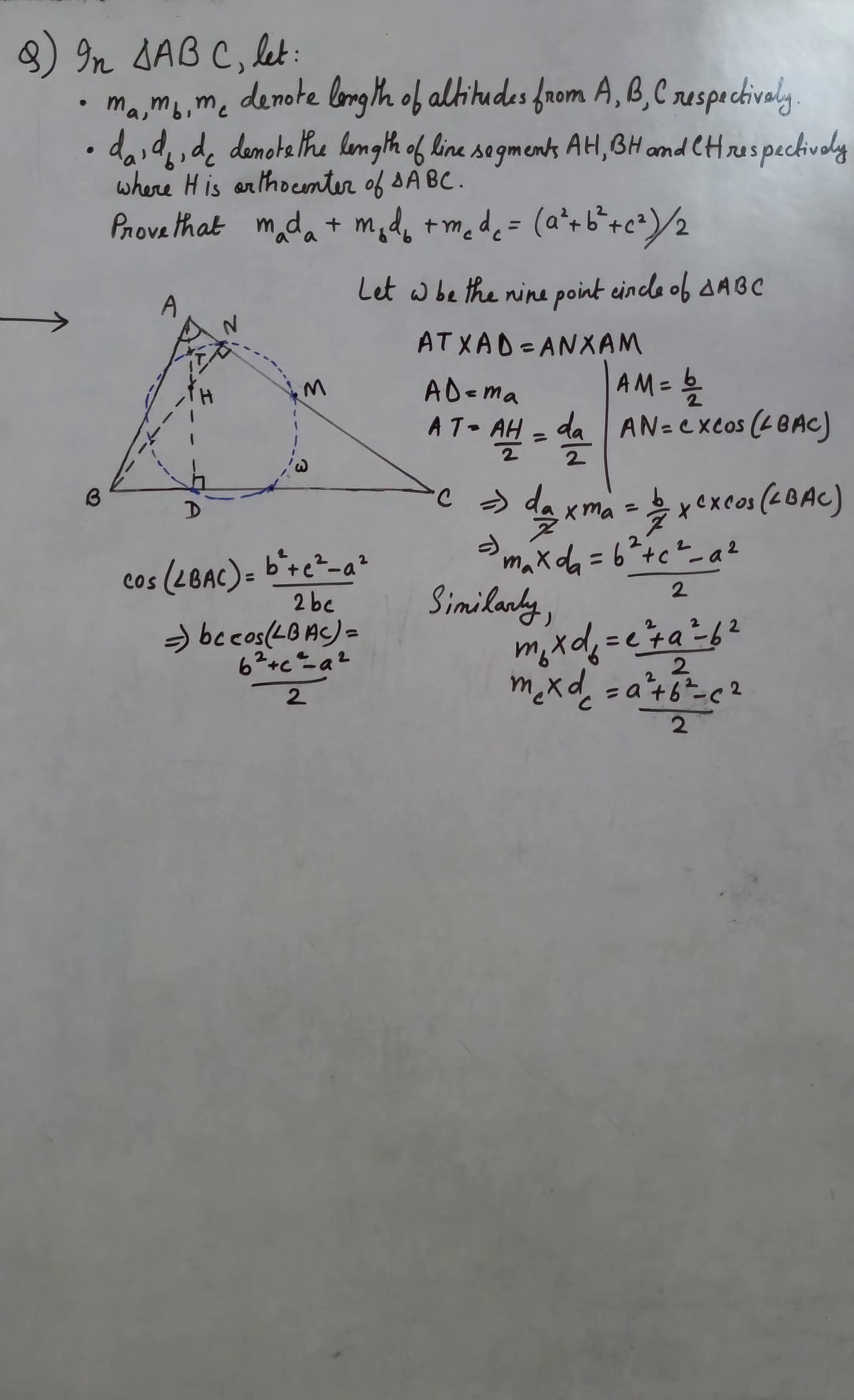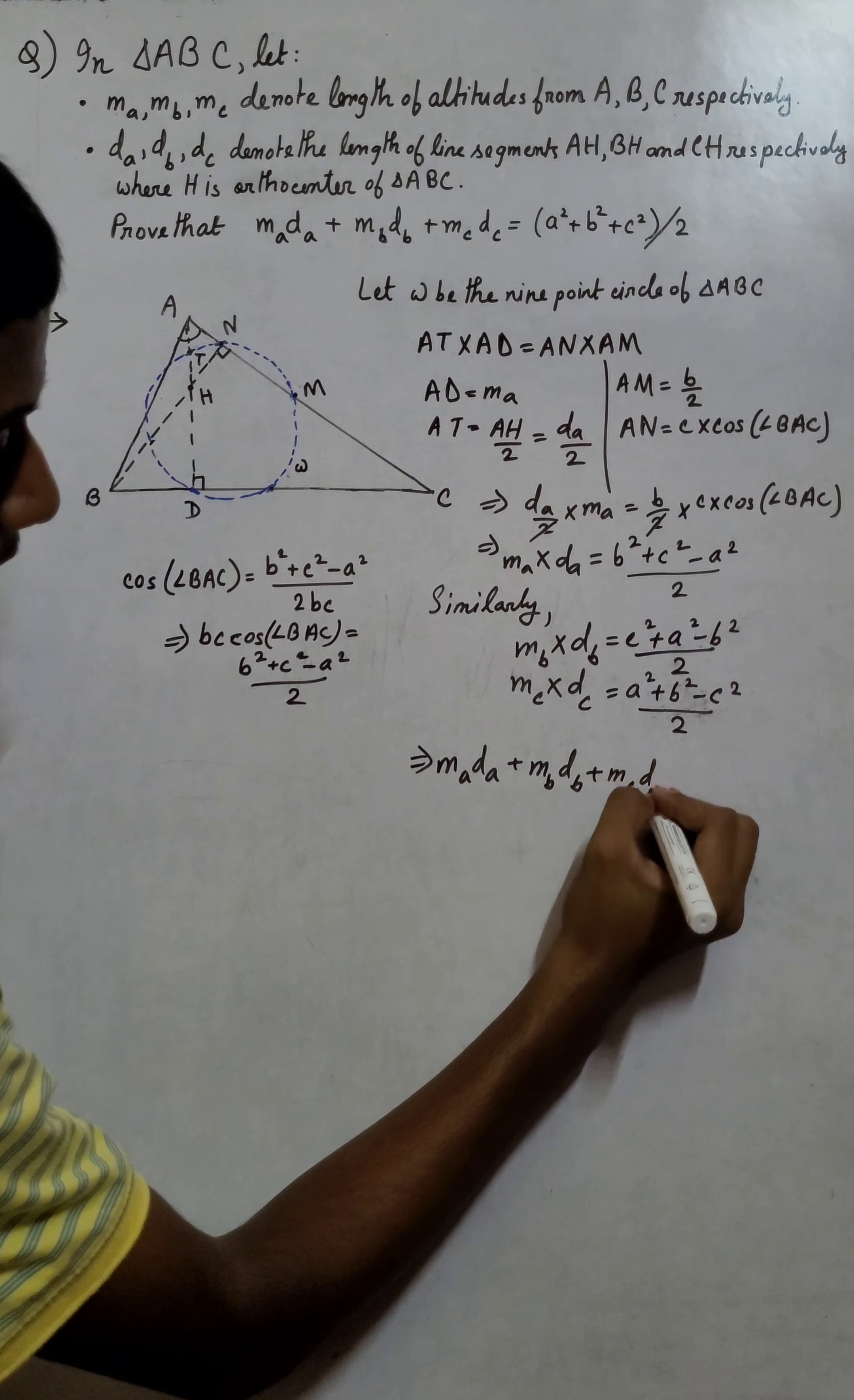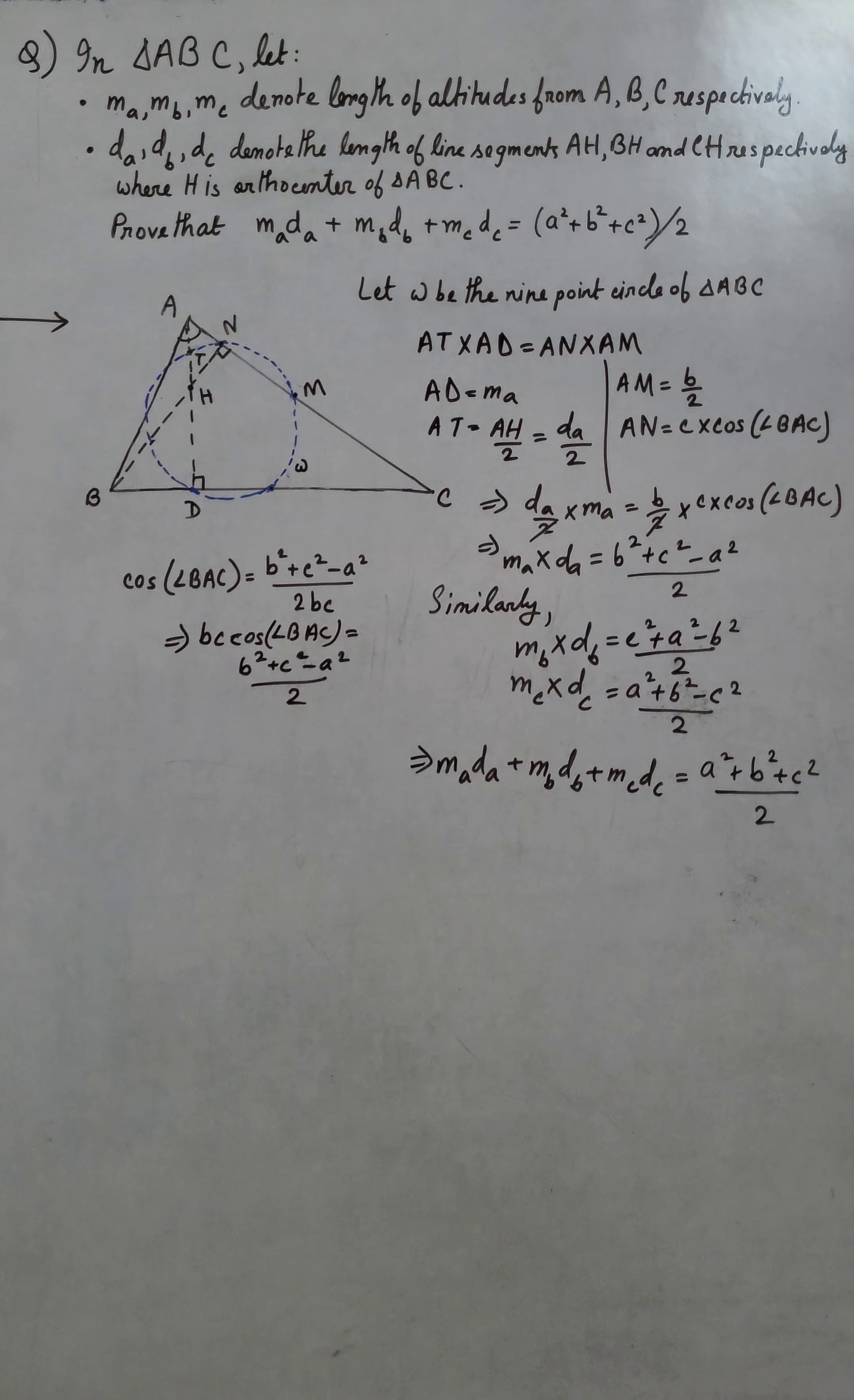We add these equations and obtain that MA times DA plus MB times DB plus MC times DC equals (A² + B² + C²)/2. That's what we needed to prove, and that finishes our proof. Thank you.